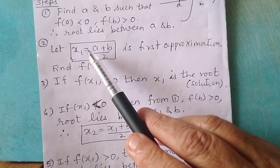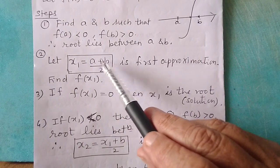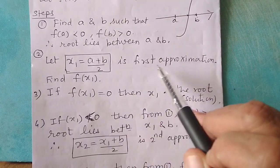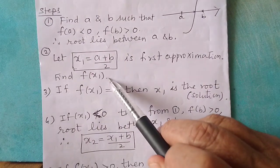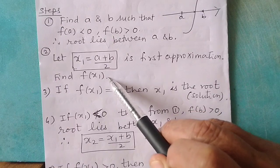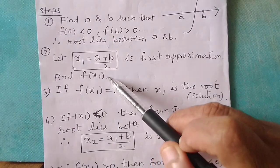The first approximation is x1 equals a plus b upon 2. The next approximation is x2, the next one is x3, and so on.